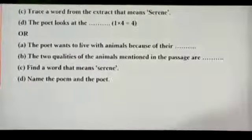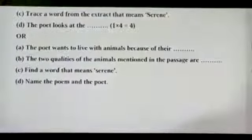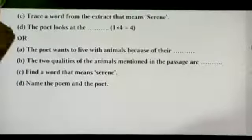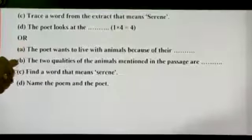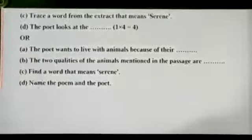Then the second is there. The poet wants to live with animals because of them. You will do it on your own again. The two qualities of the animals mentioned in the passage are, it is the repetition of the question discussed above. Find a word that means serene. Again, it is a repetition. Name the poem and the poet.